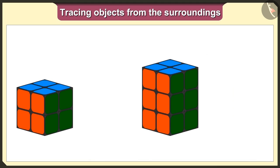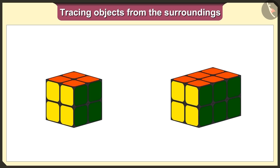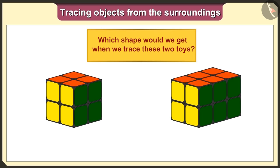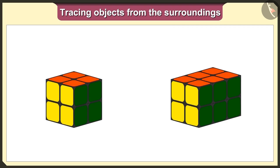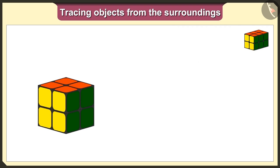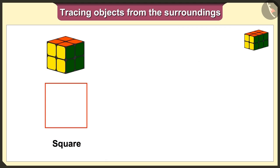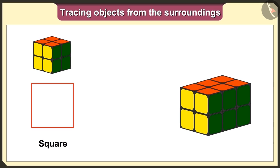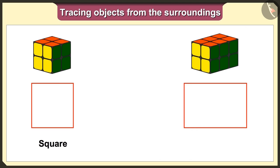Now let's change their base and keep both the toys in a different position. Now tell me, which shape would we get when we trace these two toys? If we keep this cube toy on paper and trace it, then we will get the square shape like this. And if we keep this cuboid toy on paper and trace it, then we will get a big square shape like this.